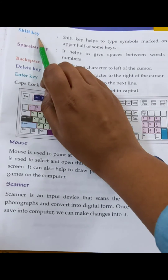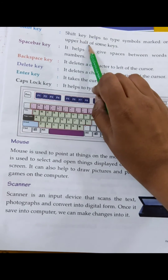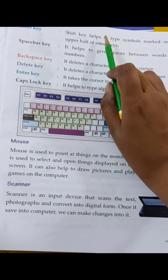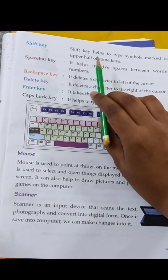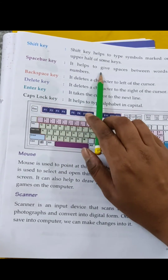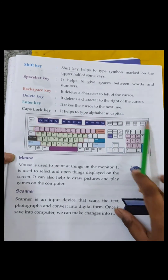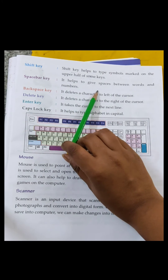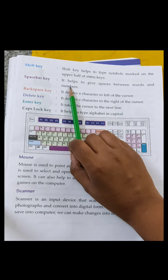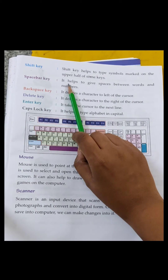Next is Shift key. Shift key helps to type symbols marked on the upper half of some keys. Shift से upper half के symbols type होते हैं. Next is Space bar key. It helps to give space between words and numbers. जैसे कि नाम से ही पता चल रहा है — Space bar key space देती है words और numbers के बीच में. जैसे 1, 2, 3 लिखा और space key दबाई तो थोड़ा gap आ जाएगा — words एकदम clear लगते हैं.